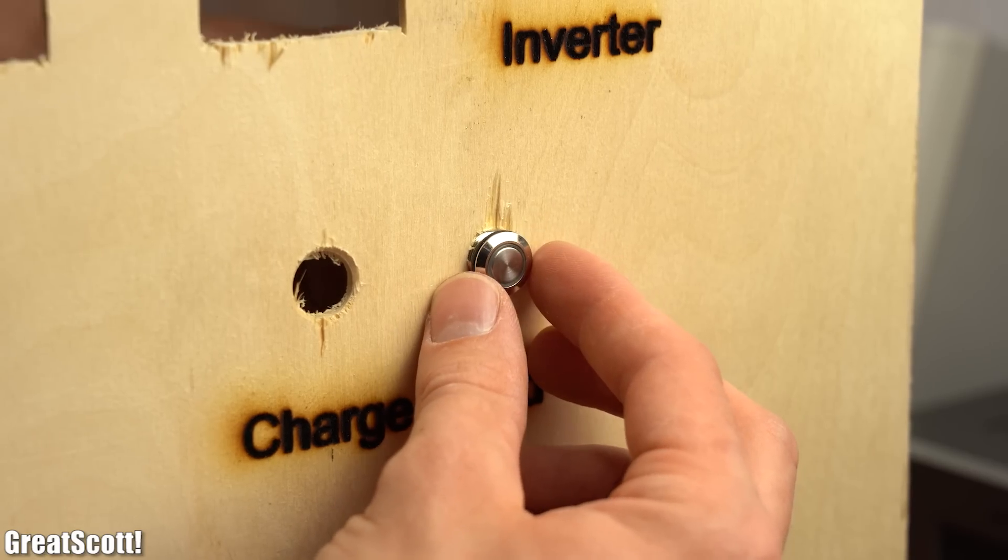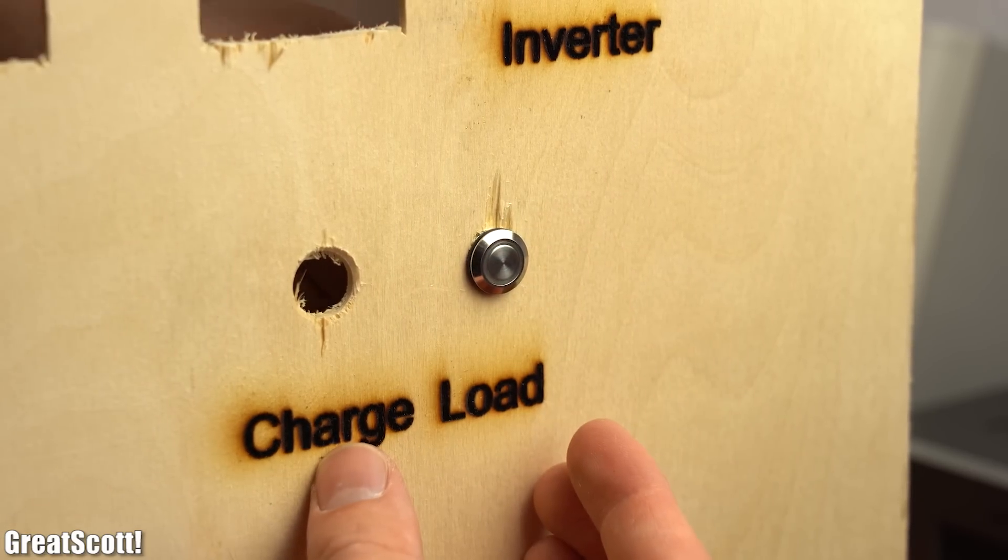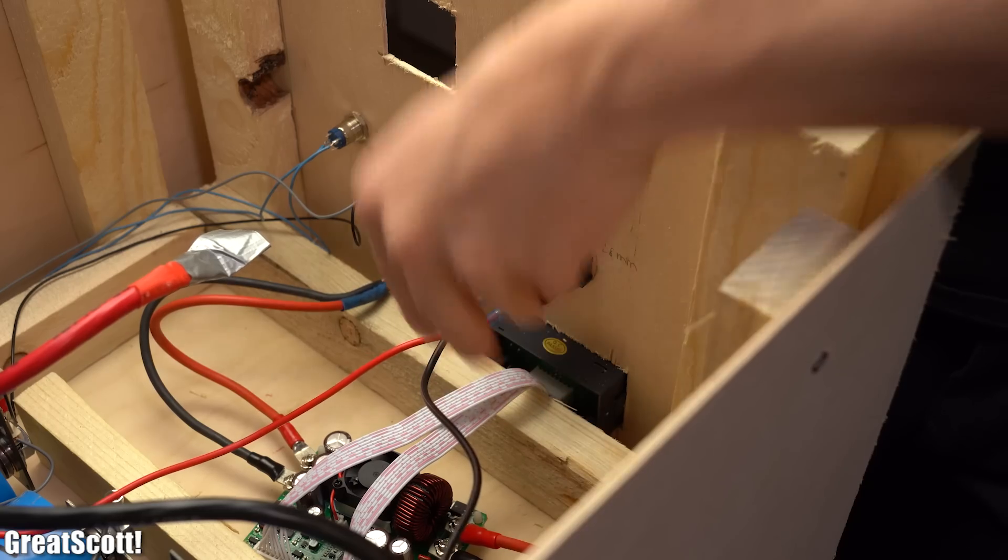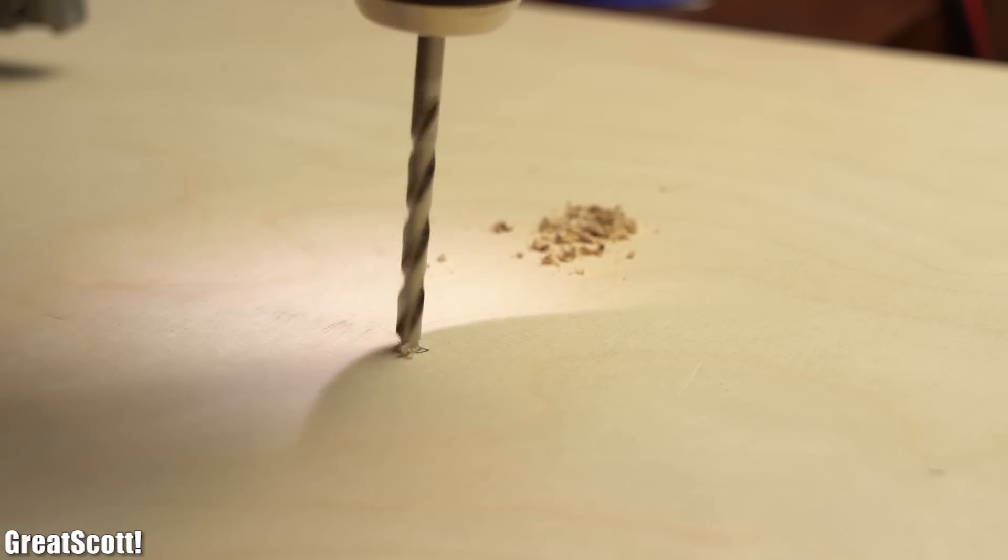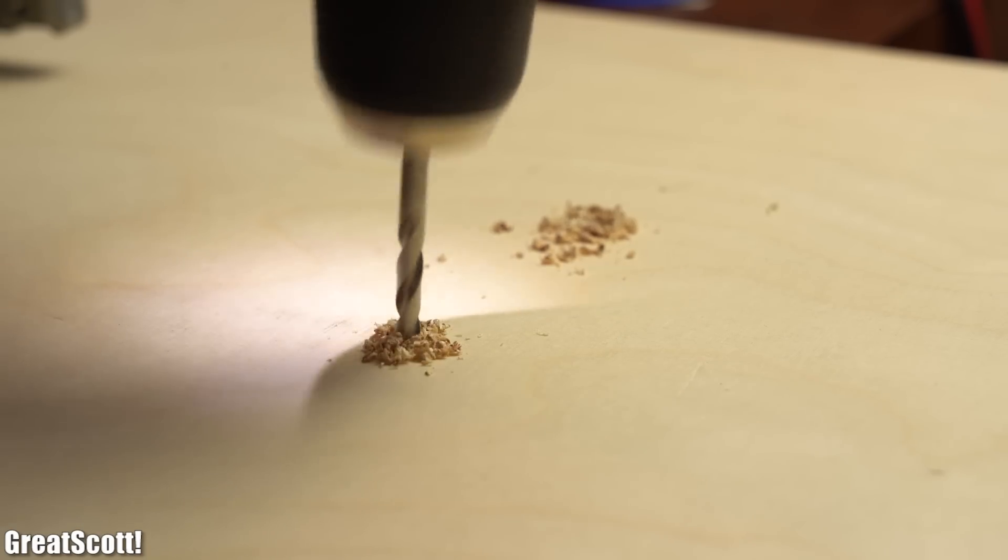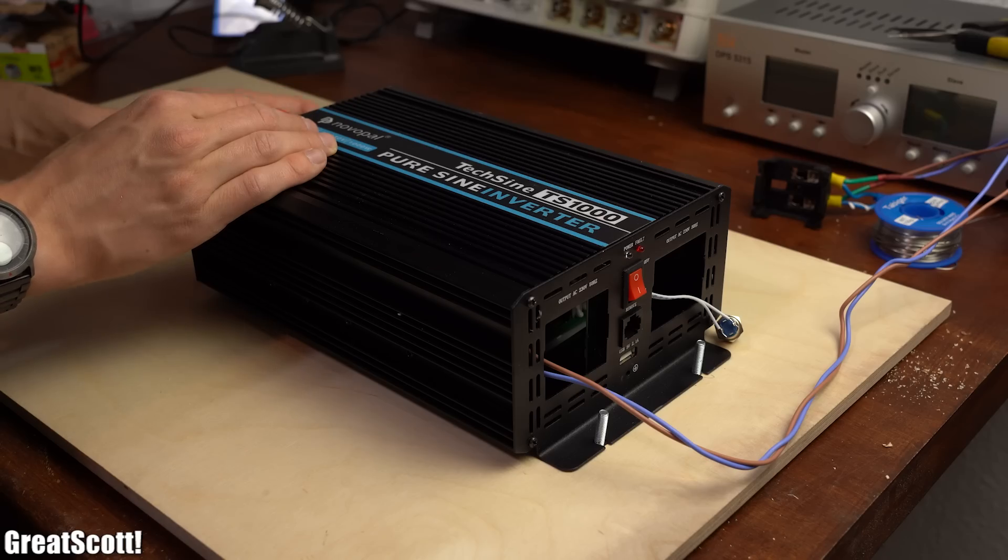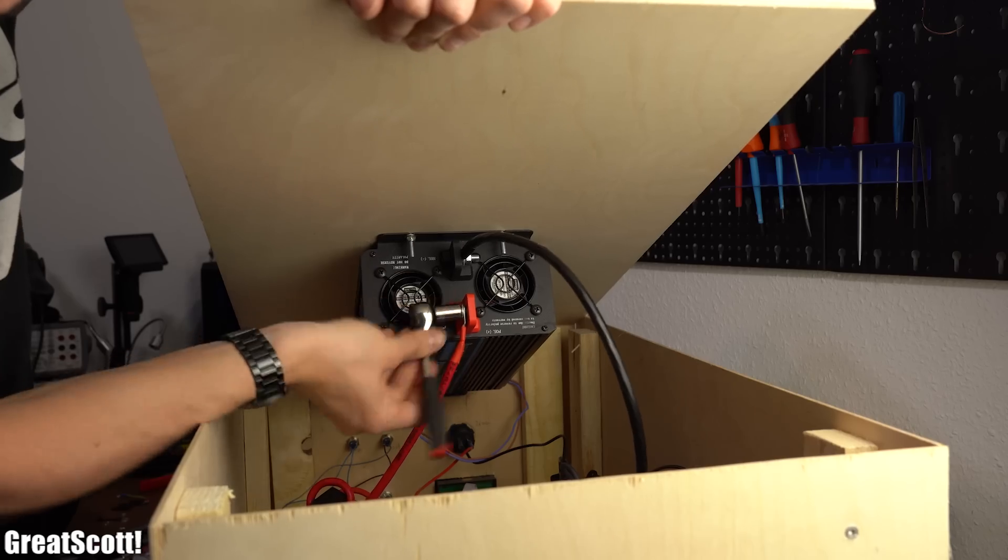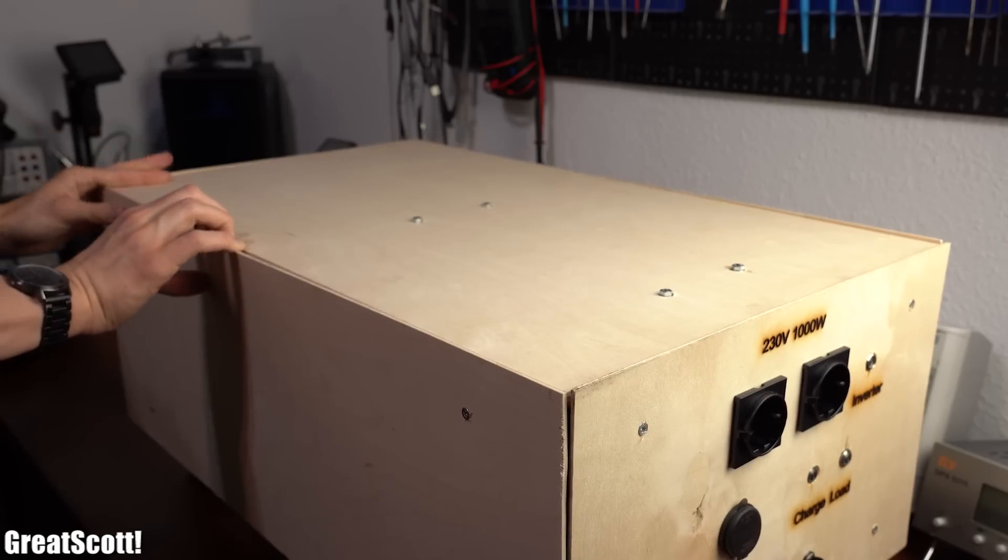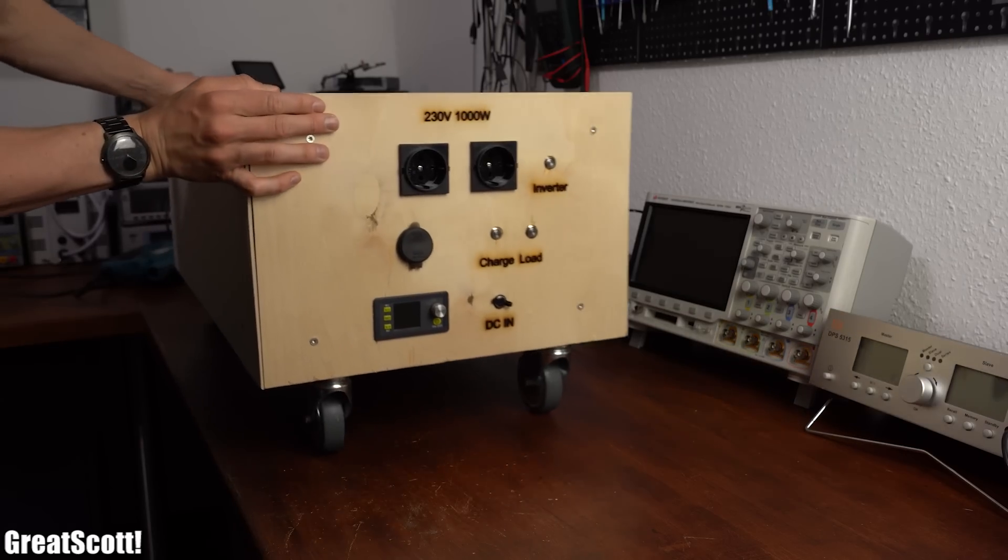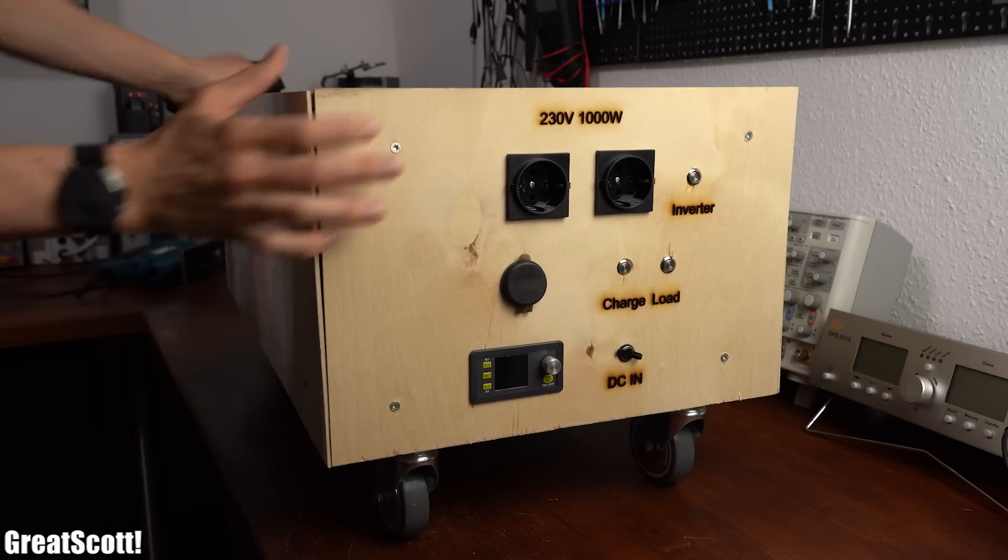And all there was now left to do was to add the remaining components, wire them all up, drill holes for the inverter in the top plywood sheet, secure it there through nuts and bolts, wire it up as well and let it fall into position. And just like that you can make a portable power station.